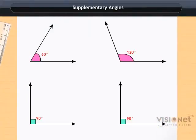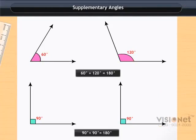Let us now look at the pairs of angles. Do you notice that the sum of the measures of the angles in each pair comes out to be 180 degrees?